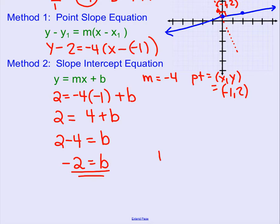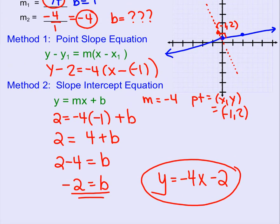Now we know the b, the y-intercept. So we go ahead and write this in slope-intercept form, y equals slope of negative 4 and y-intercept of negative 2. So here is the equation of our line that is perpendicular to the blue one.